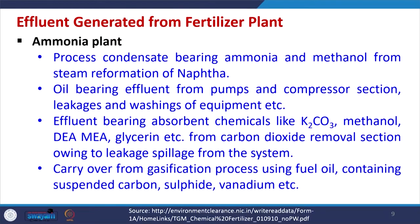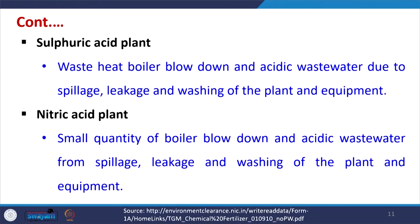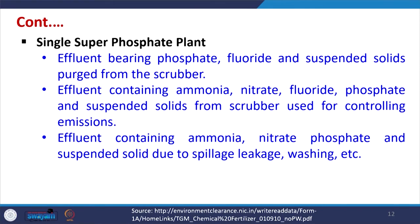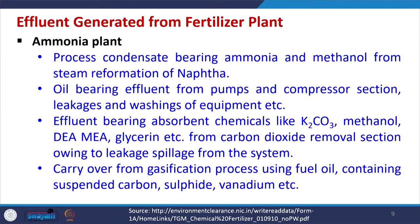In the fertilizer plant, different types of effluent can be generated. The ammonia plant can generate effluent including process condensates bearing ammonia and methanol from steam reformation of naphtha, oil-bearing effluent from pumps and compressor sections, effluent bearing absorbent chemicals such as K2CO3, methanol, DEA, MEA, and glycerin from the carbon dioxide removal section due to leakage and spillage.